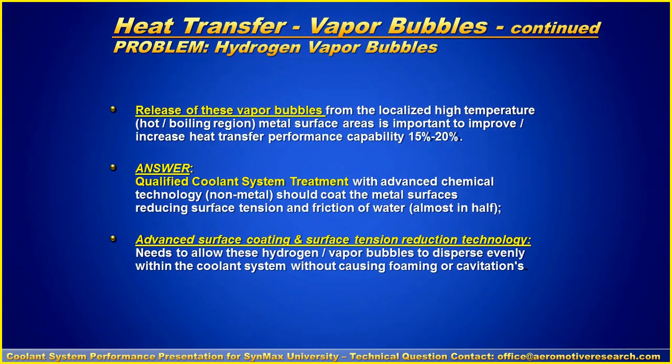Further release of these vapor bubbles from the localized high temperature hot boiling region of the metal surface is important to improve heat transfer and performance capability. That is an issue. Now the answer is you use a qualified coolant system chemistry with advanced chemical technology that should coat the metal surfaces. When you have advanced surface coating and surface tension reduction technology, it will allow these hydrogen bubbles to disperse evenly within the coolant system without causing any foaming or cavitation. In other words, it will control it.